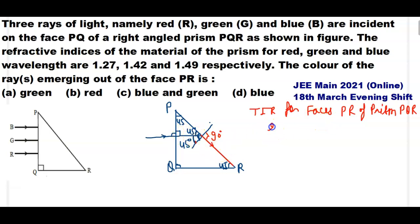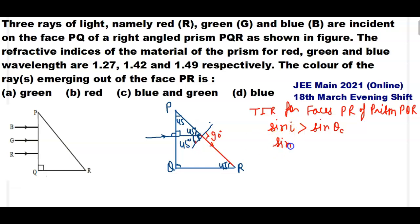For TIR, sin(i) must be greater than sin(θc), the critical angle. The angle of incidence is 45 degrees, so sin 45° = 1/√2 must be greater than sin(θc). Therefore, 1/√2 should be greater than sin(θc).